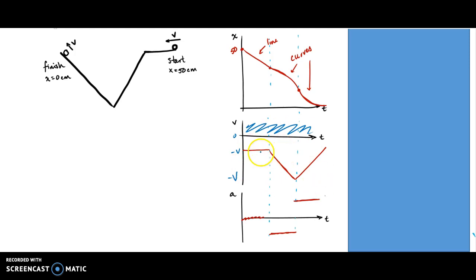Once I have that done, then I can make my acceleration time graph. Acceleration is defined as the slope of the velocity time graph. So, if I look, this slope is 0, so I have an acceleration of 0.